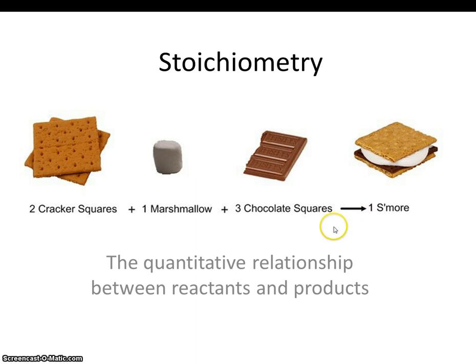For example, if we want to make one s'more, we need one marshmallow. If we want to make one s'more, we need three chocolate squares. So the ratio would be 1 to 3. If we react three chocolate squares, we'll also react two crackers. So the ratio between chocolate and crackers will be 3 and 2.